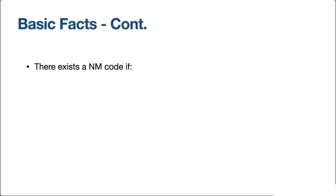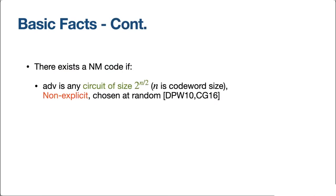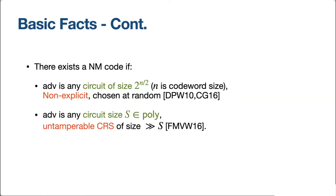Here are some known results. In the original work of Dziembowski, Pietrzak, and Wichs, it was already shown that this primitive exists, at least non-explicitly: a random encoding scheme is secure for any circuit of size 2^(n/2). For explicit constructions, if we limit the adversary to be a polynomial-sized circuit and assume an untamperable CRS bigger than the size of the adversary, there is an explicit construction.